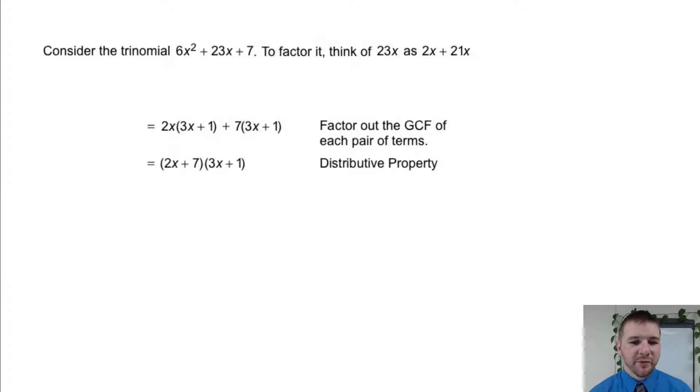Then we use the distributive property. If we have 2x's worth of (3x + 1)'s, plus 7 more (3x + 1)'s, well that's (2x + 7) worth of (3x + 1)'s. And that's the same as (2x + 7) times (3x + 1).